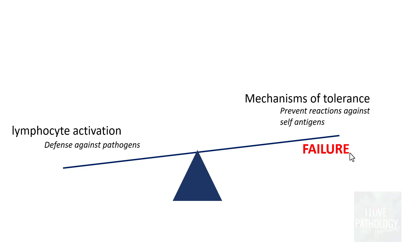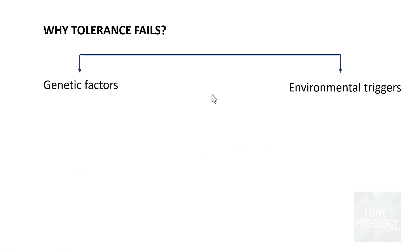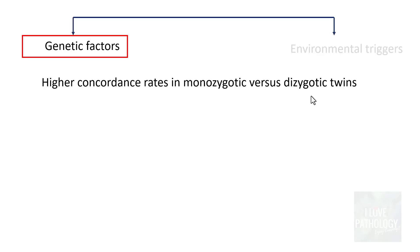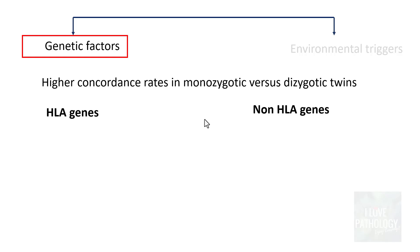Autoimmune disease is basically an imbalance between lymphocyte activation and the mechanisms of tolerance. The most important reason for autoimmunity is failure of mechanisms of tolerance. The reasons why tolerance fails are various genetic factors and environmental triggers. Genetic factors play a major role in diabetes mellitus because there are higher concordance rates in monozygotic twins compared to dizygotic twins, suggesting a strong genetic association. Genetic associations can involve HLA genes or non-HLA genes.